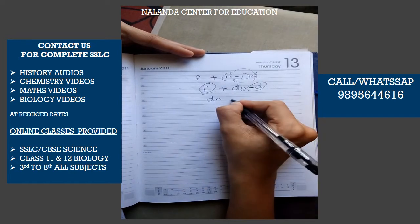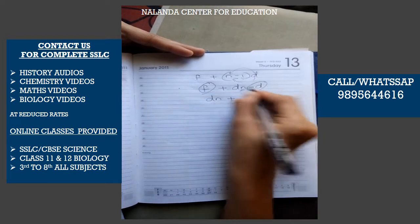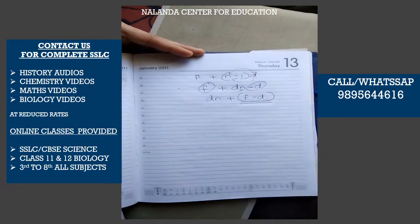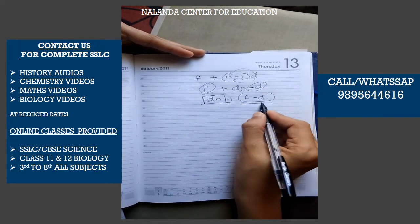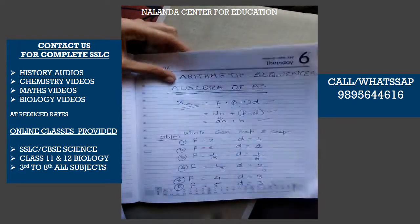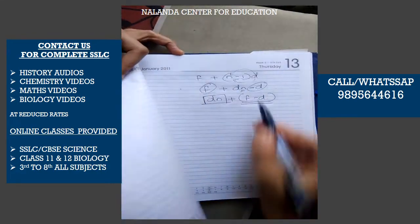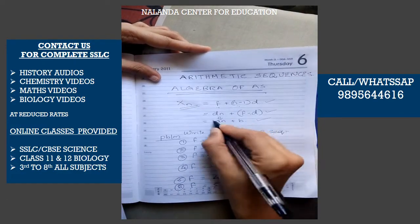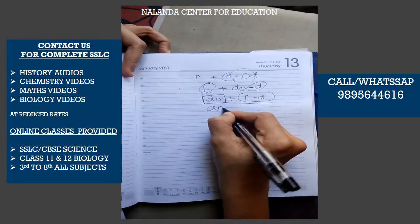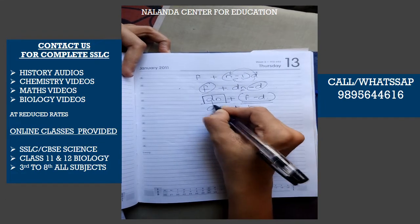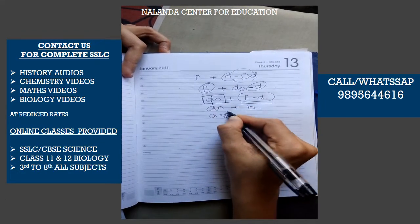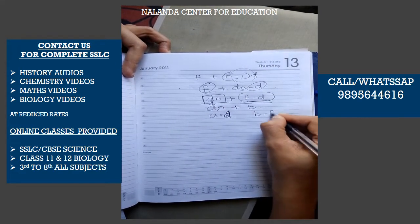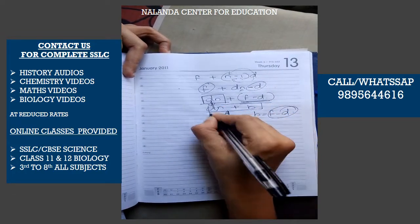Now rewriting: n minus d. We can express it as an plus b, where a equals d (the common difference) and b equals f minus d. So the general expression becomes xn = dn + (f minus d), which is equivalent to an plus b.